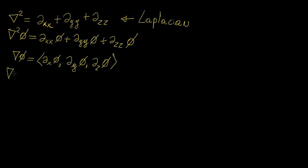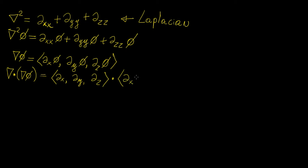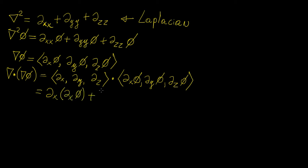One thing we could do is take the dot product with the del operator once again applied to this gradient field, which is a vector in itself. We know the del operator is defined as the vector of first partial derivatives with respect to x, y, and z. Taking the dot product element by element and adding them together gives us: the partial with respect to x acting on the partial of phi with respect to x, plus the partial with respect to y acting on the partial of phi with respect to y, and finally the partial with respect to z acting on the partial of phi with respect to z.